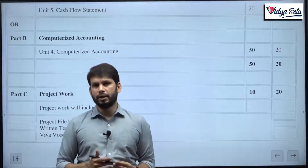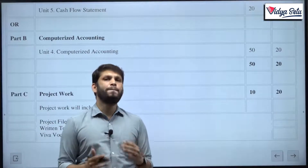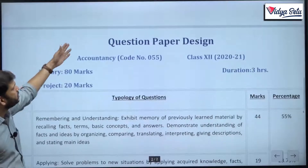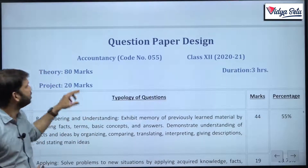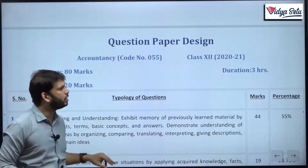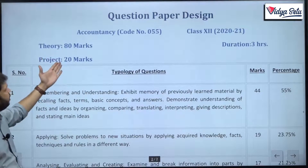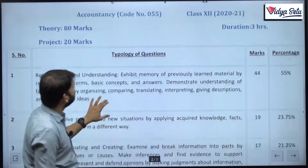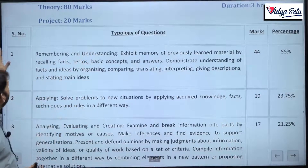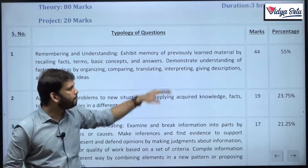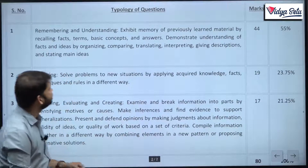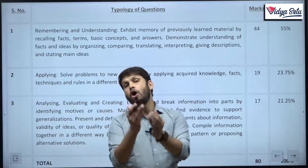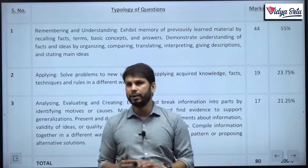Now, how is the paper structured? We will just discuss its format — how the board generally sets it. The question paper is a suggested design. The code is the same: class 12th for the year 2021, 80 marks theory, 20 marks project, with 3 hours for the 80-mark examination. Generally, what type of questions come, how many marks, and what percentage of marks out of 80 — we will discuss that here.